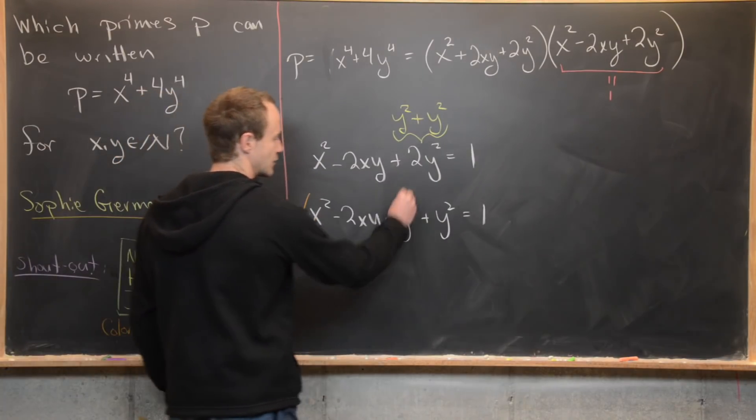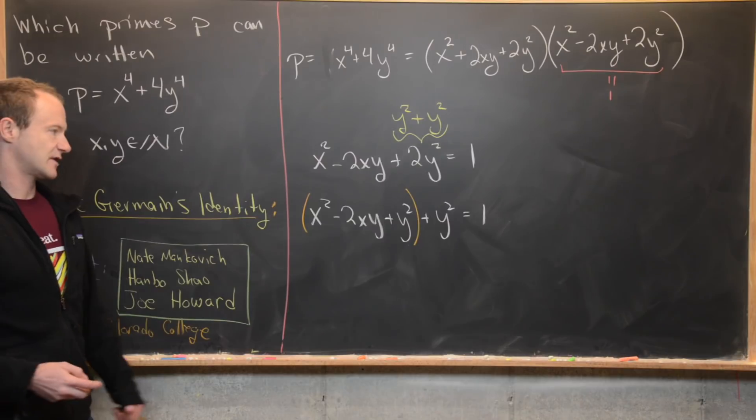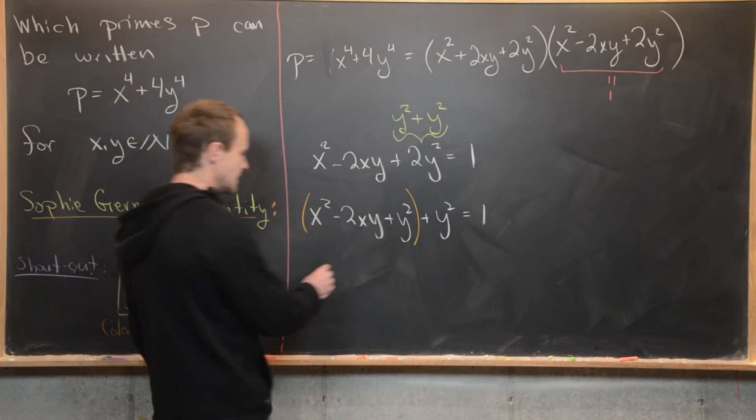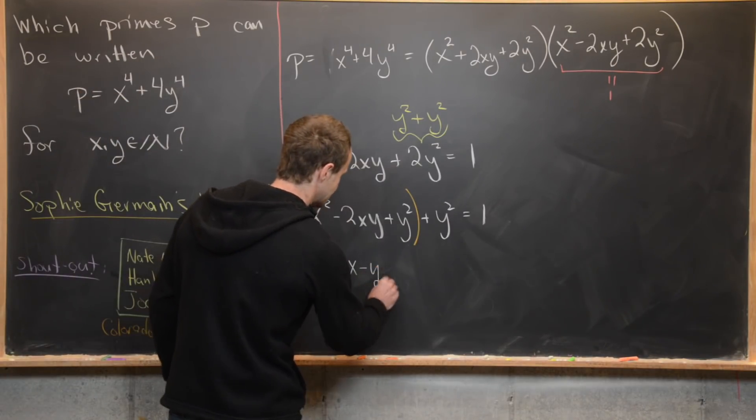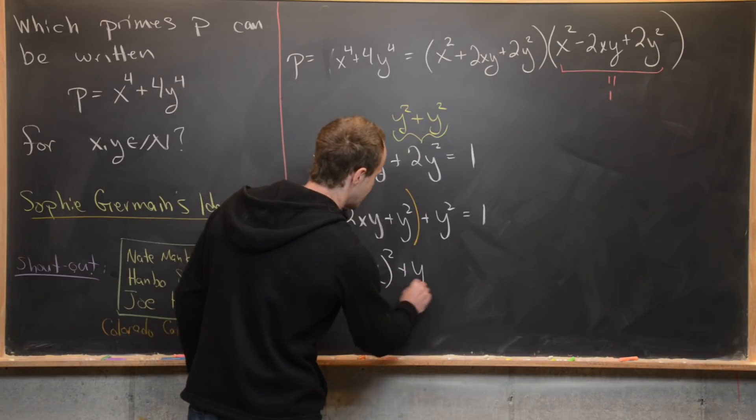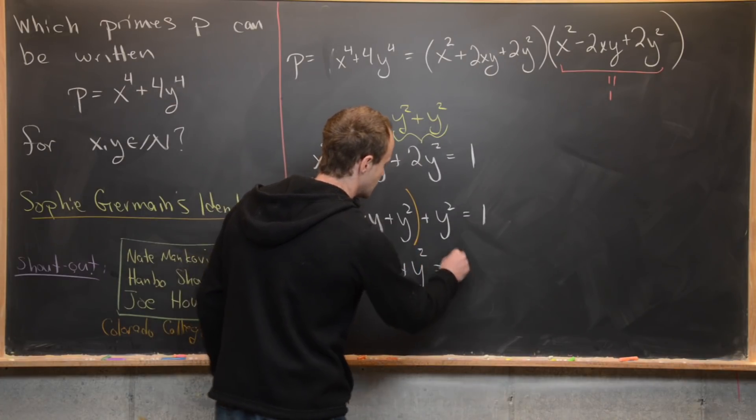Next, we can group those first three terms and factor that as a binomial squared. So that'll give us x minus y quantity squared plus y squared equals one.